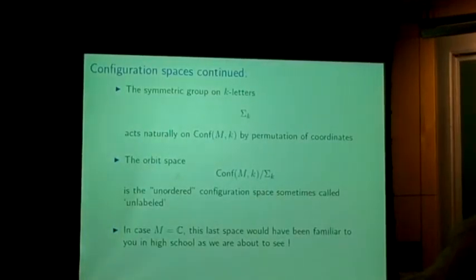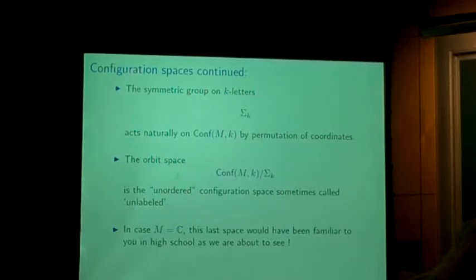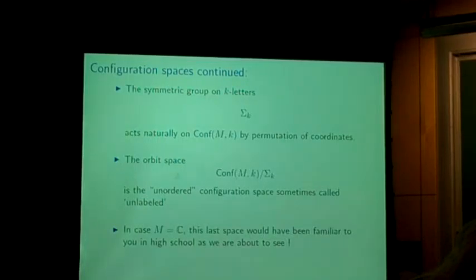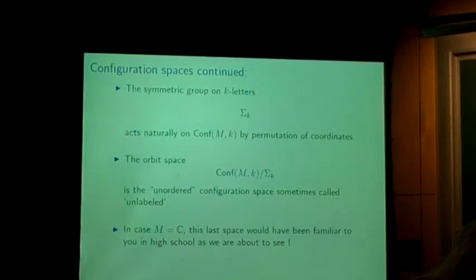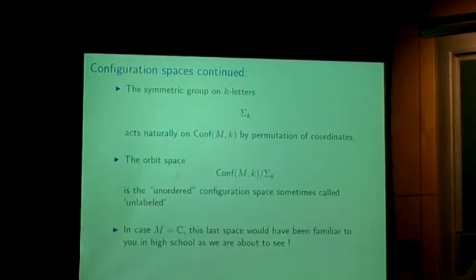Instead of looking at ordered k-tuples of points, you can imagine permuting them and quotienting out the configuration space by the action of the symmetric group — considering the topological space of unordered k-tuples of distinct points. Various people in this room have called these things various different names. The unordered configuration space is sometimes called the unlabeled configuration space, and the ordered configuration space is sometimes called the labeled configuration space. I may get the terminology interchanged somewhere in the lecture.